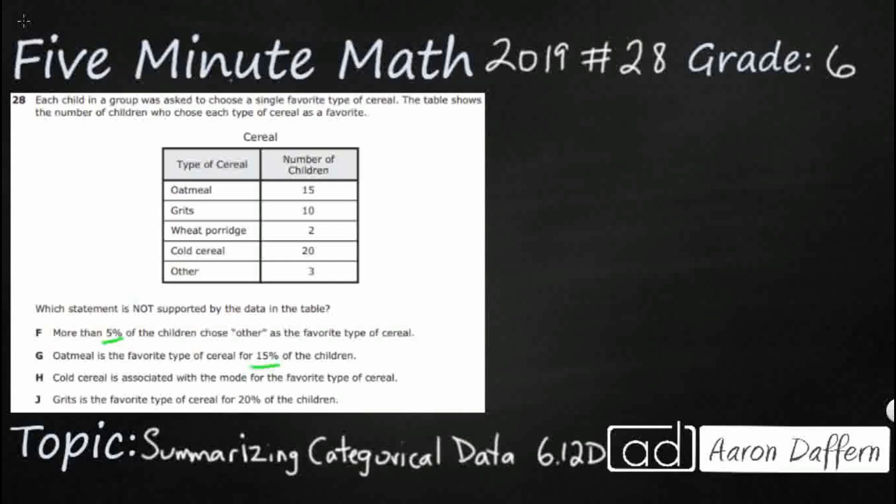5%, 15%, 20%. We've got this word mode right here, so maybe we can answer that. You know what? These are just raw numbers. 15, 10, 2, 20, and 3. We need to change these into percents.